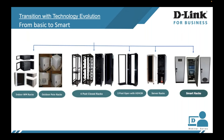Let's see where we started and where we are going. What you see on your screen is all types of racks, from a basic rack up to the smart rack. At the extreme left you see wall mounts — indoor, outdoor, single section, double sections. Then you see four-post closed racks, two-post open racks, regular server racks, and then smart racks.